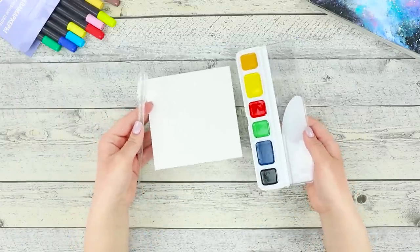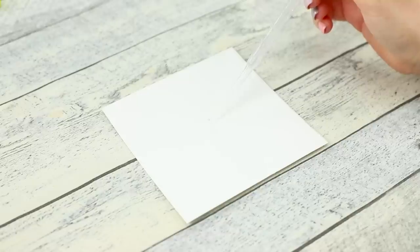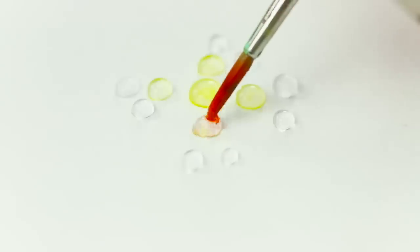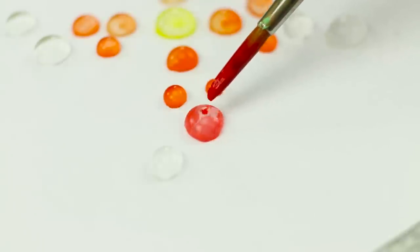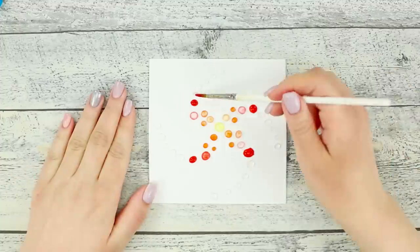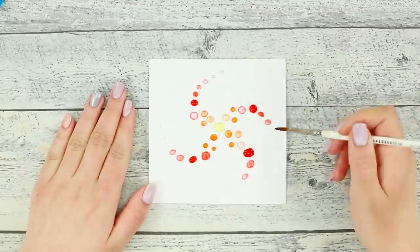For the first idea, take watercolors, a pipette, and a piece of paper. Use the dropper to draw a design on the paper. Now take a brush and paint the drops different colors. Touch the drops very carefully so that they do not bleed. Finish the ornament and add some bright colors to the water again.